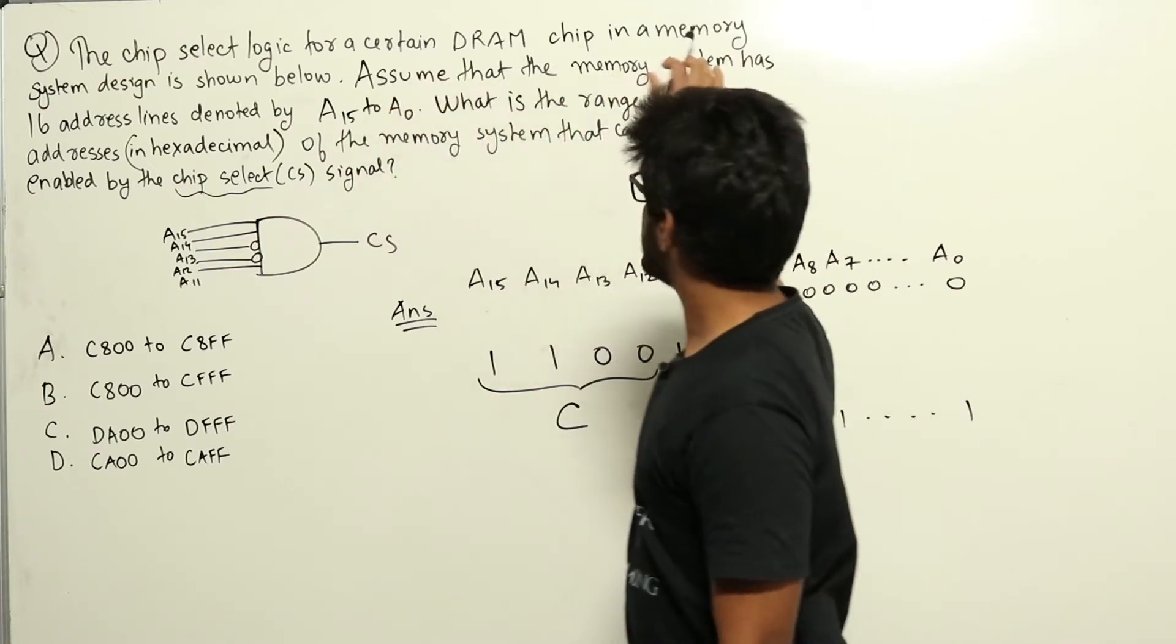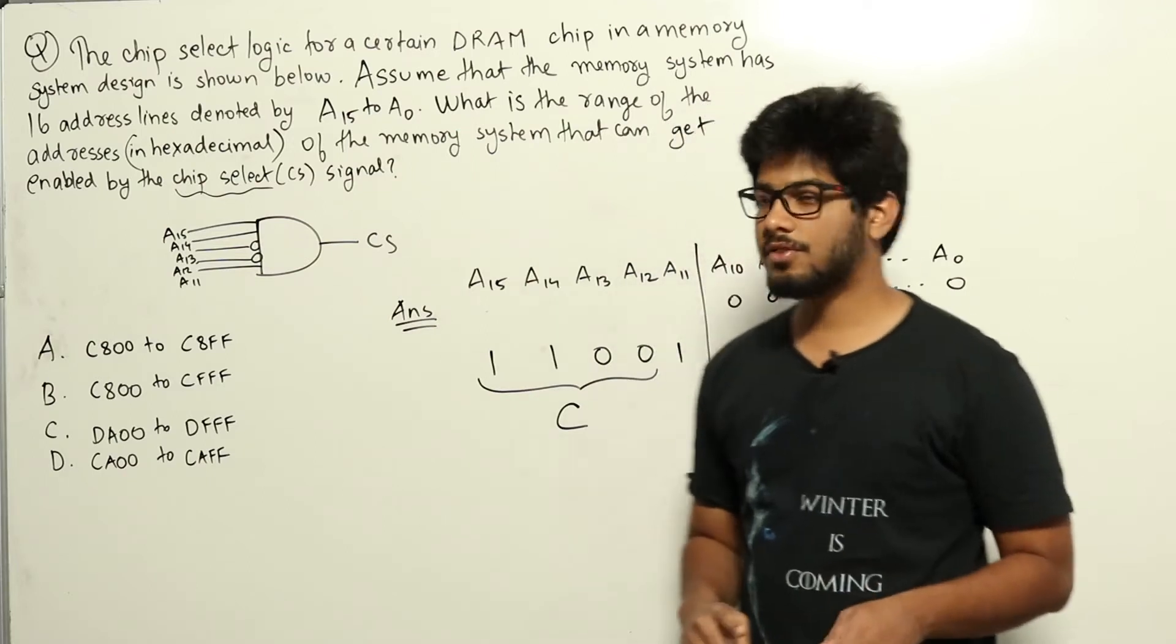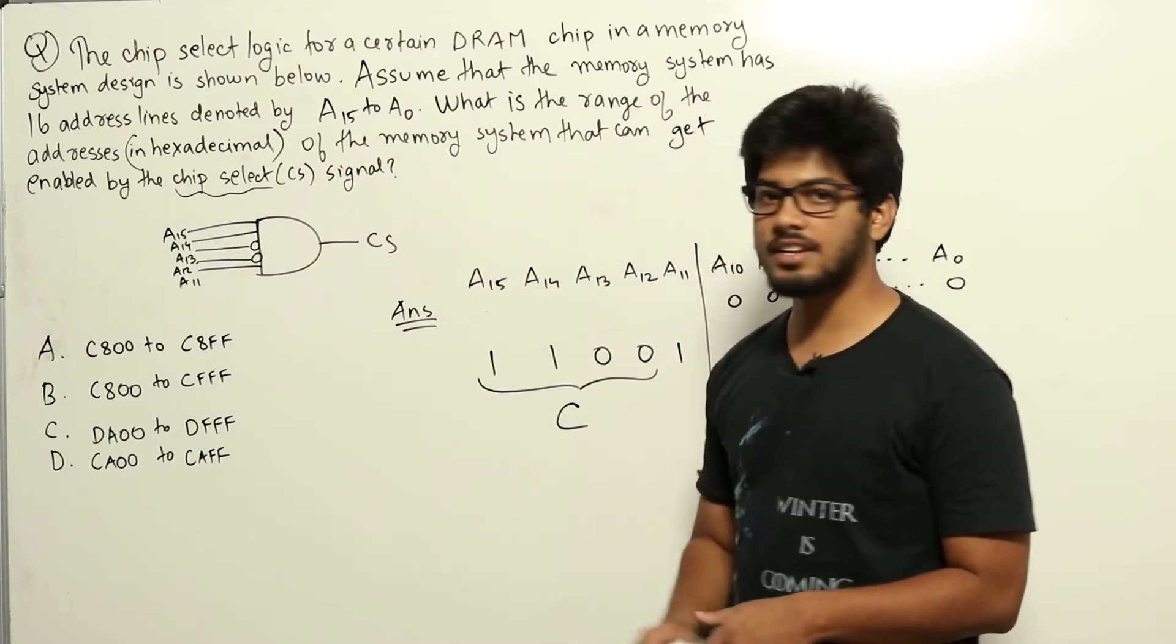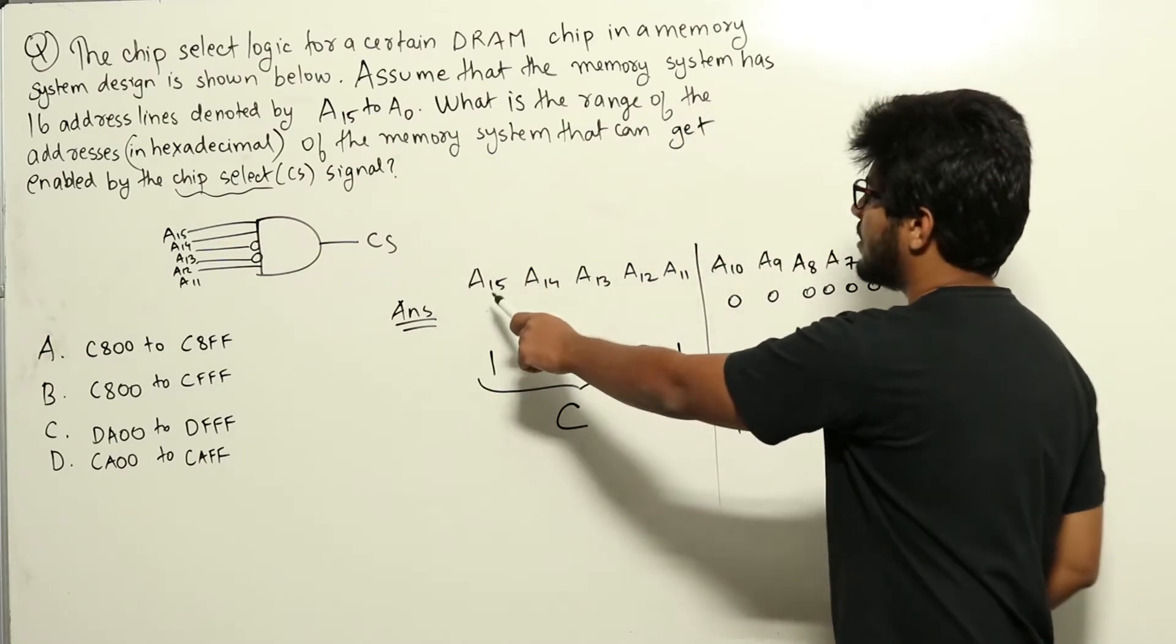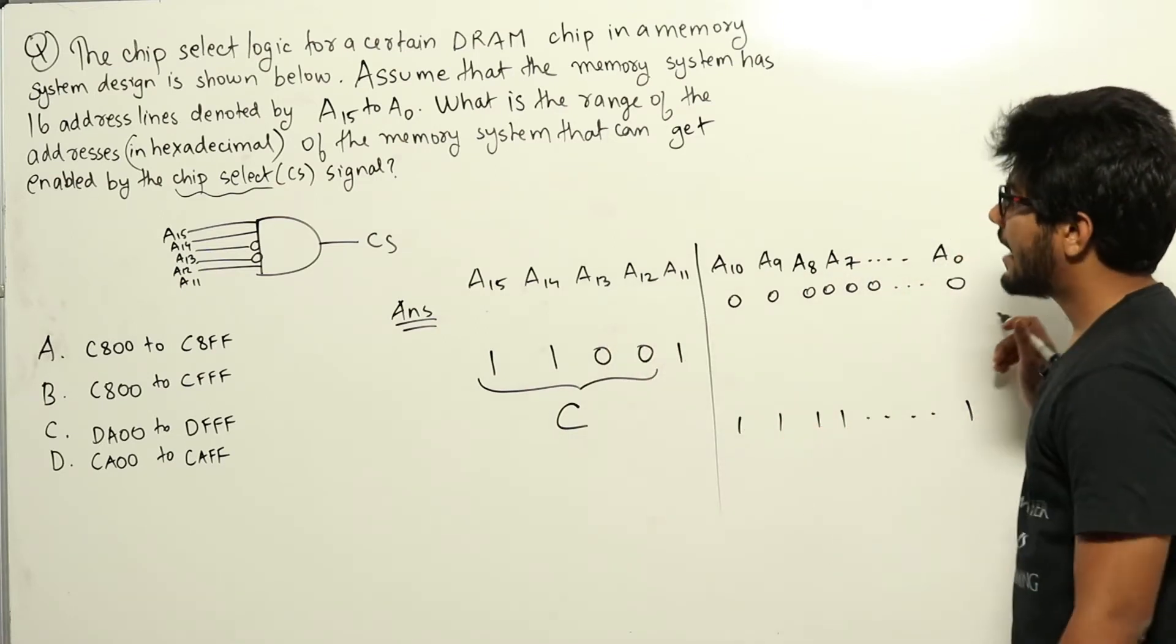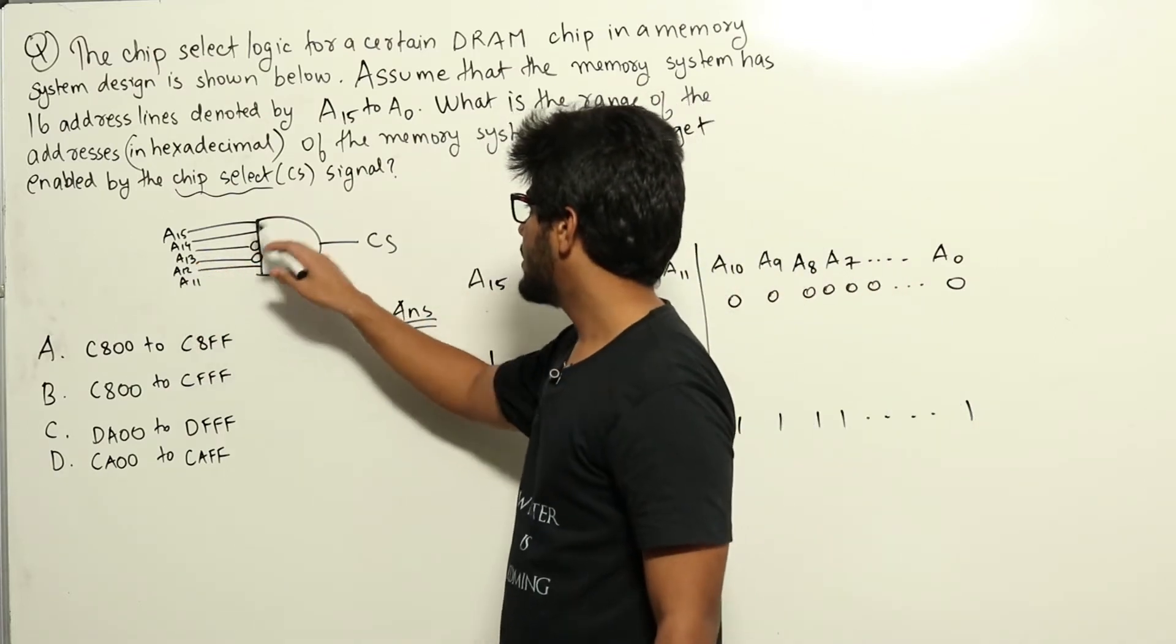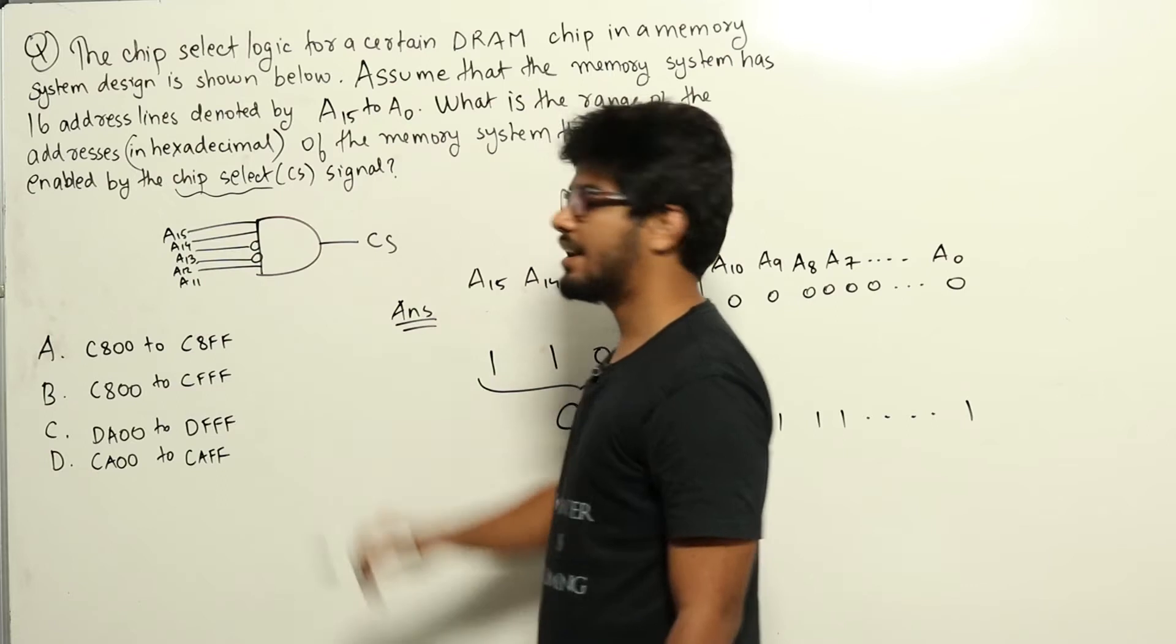See, this memory system has 16 address lines denoted by A15 to A0. So from A15 to A0 we have 16 address lines which I have denoted here: 15, 14, 13, 12, 11 up to A0, and among these, five of these—A15, A14, A13, A12, and A11—are being input to this AND gate.